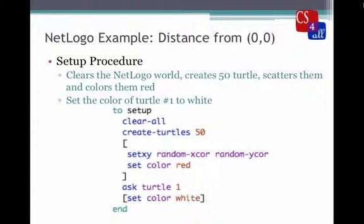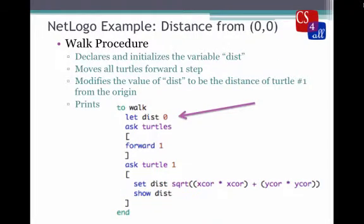Here's the setup procedure. You can see that we've cleared the NetLogo world, created 50 turtles, and scattered them randomly across the NetLogo plane. Then we set the color of all 50 turtles to red. After that, we ask Turtle 1 to change its color to white.